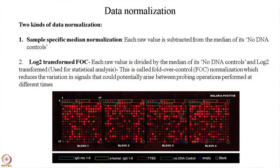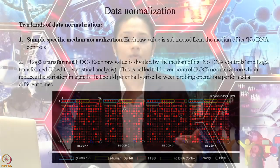There are two normalization strategies. The first is a simple normalization used only for visualization, such as preparing heat maps. The second is a more stringent normalization for statistical tests. For the first method, we subtract the raw values for each IVTT spot from the sample-specific median value of the no-DNA controls.